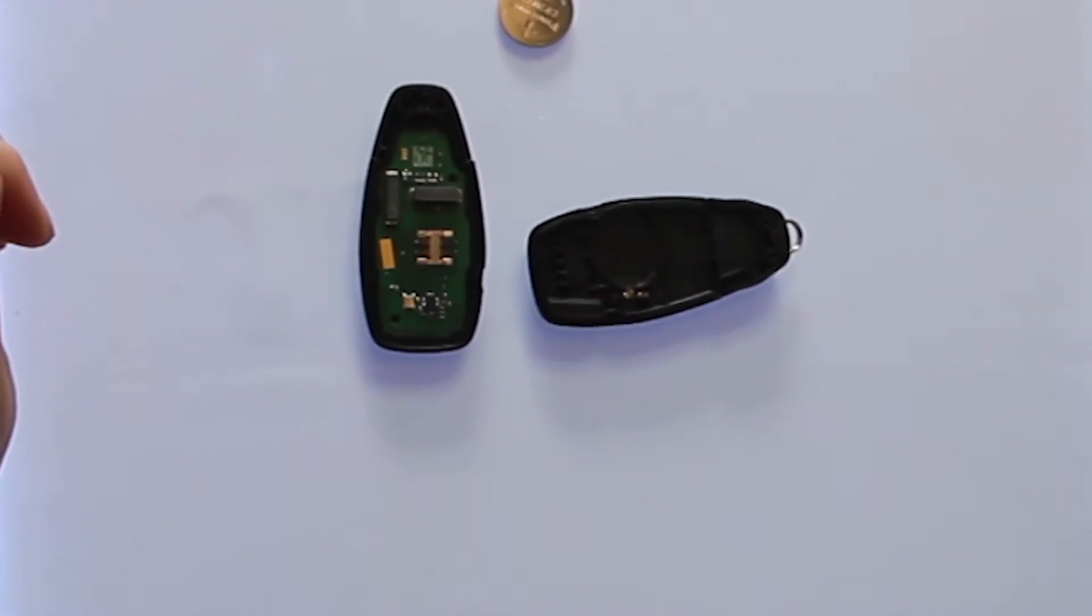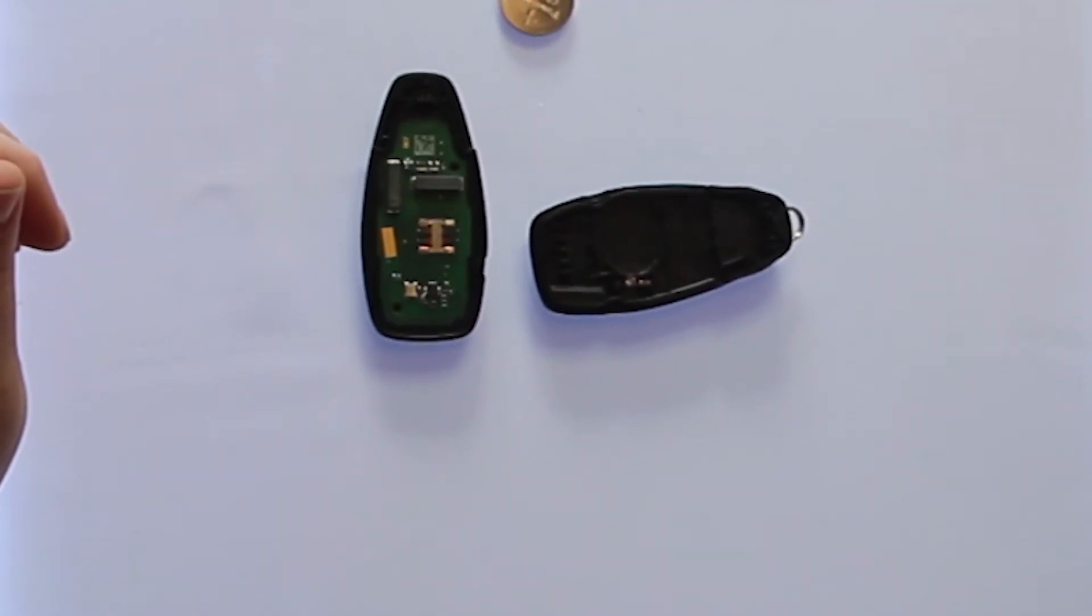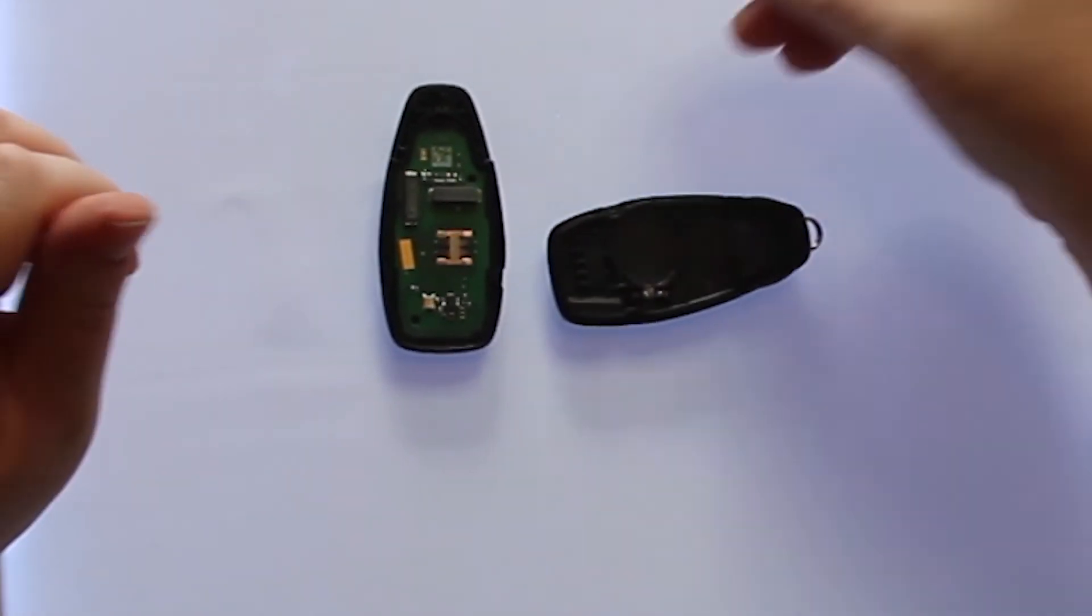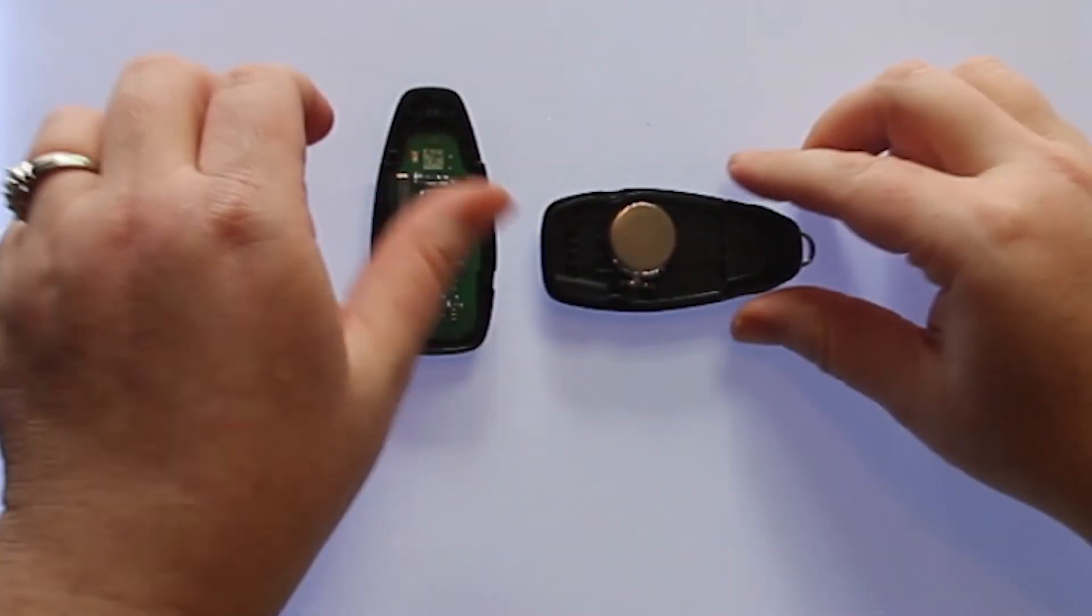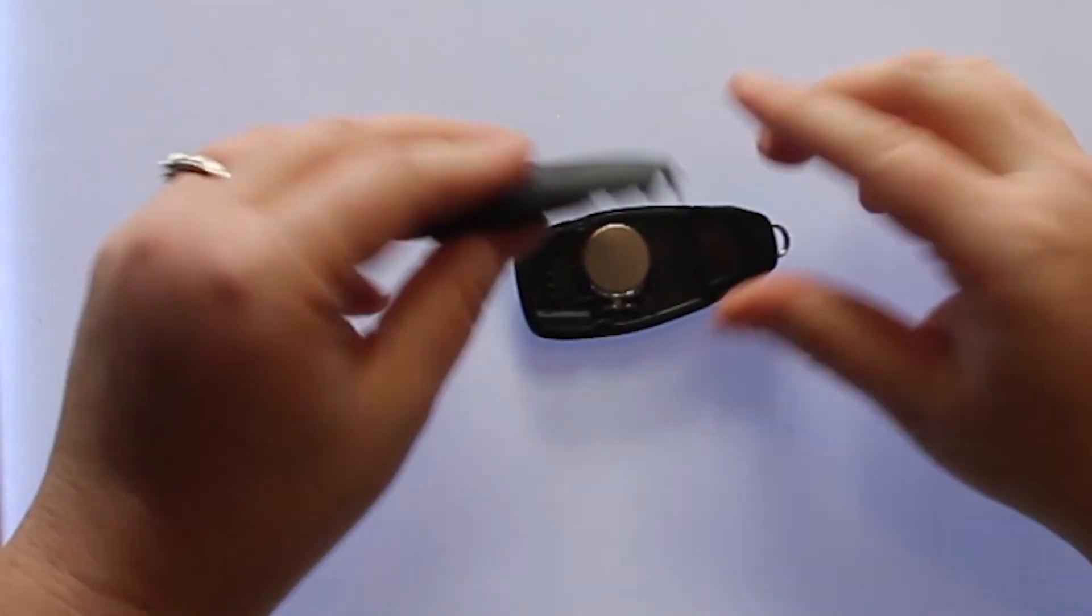The battery used in this key fob is a CR2032. Once you have the old battery out, to replace it, simply slide the new battery back into place. With this key fob, it is plus side down.